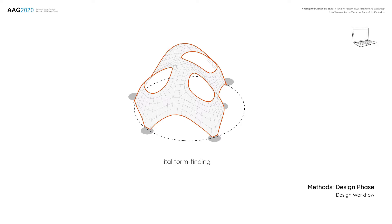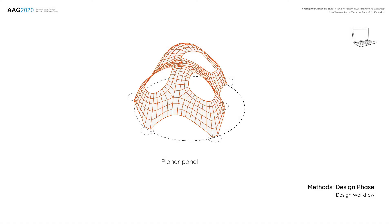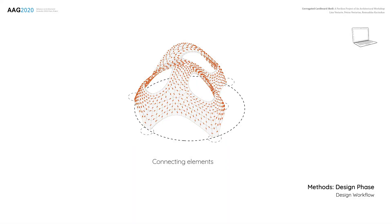The next step was directly related to the sheet material and laser cutter fabrication, so we had to use planar elements. For the panels, we applied the projection method. Finally, the last step was the design of the diagonal elements connecting neighboring panels.